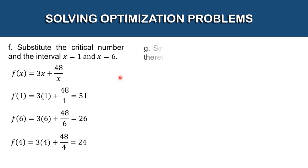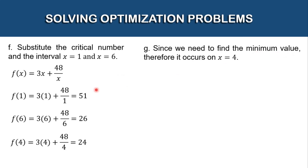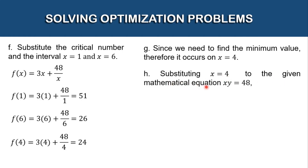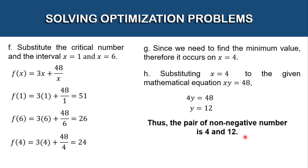Since we are finding the minimum value, we look for the smallest result. The minimum occurs at x = 4, giving a value of 24 — the lowest compared to 51 and 26. Substituting x = 4 into x · y = 48: 4y = 48, so y = 12. Thus the pair of non-negative numbers is 4 and 12. If you find this video informative, please don't forget to like, share, and subscribe. Thank you for watching. God bless us all.